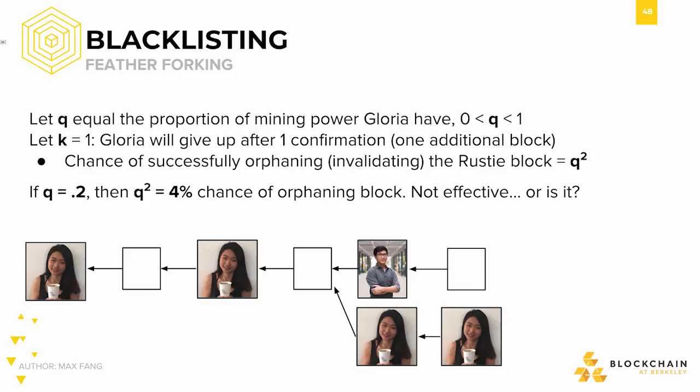So what chance does Gloria, the mining pool, actually have at successfully forking? To answer this question, let's suppose that she has Q proportion of the total mining power. Let's have K, the number of confirmations after which she'll give up, be equal to 1. This means that she has a Q times Q, or Q squared, chance of successfully orphaning my block.